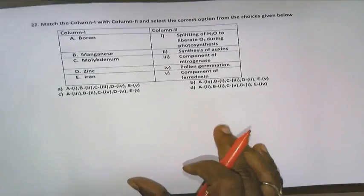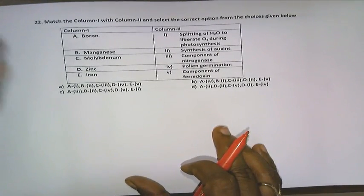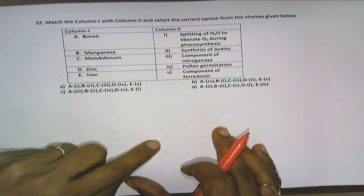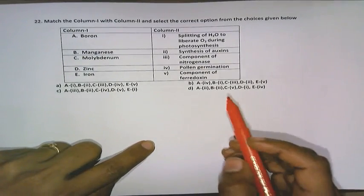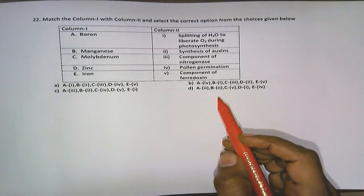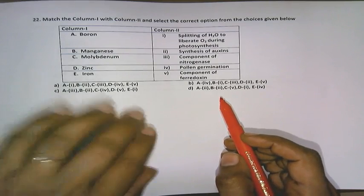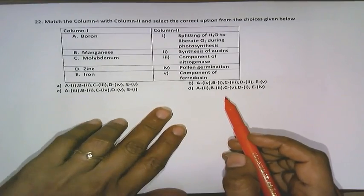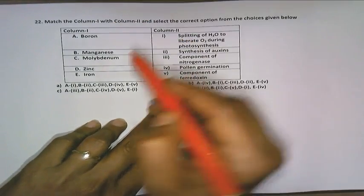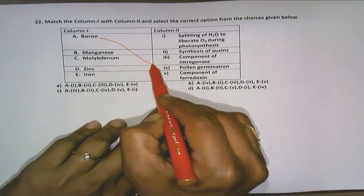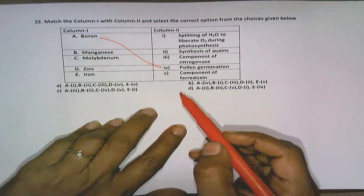As we move on to the next question students. Match the column 1 components in column 1 with that of column 2. As we move on to this question, we see here boron. Boron is a very important component which promotes pollen germination. So let us connect what we know, boron onto pollen germination.